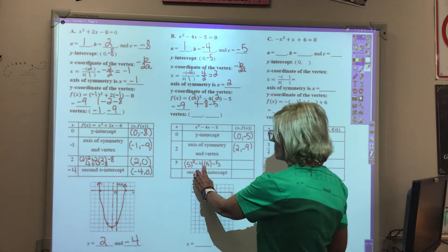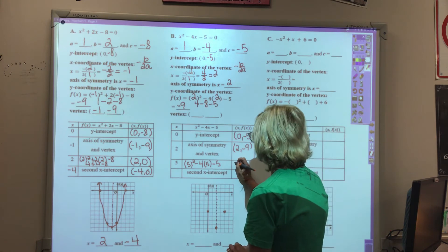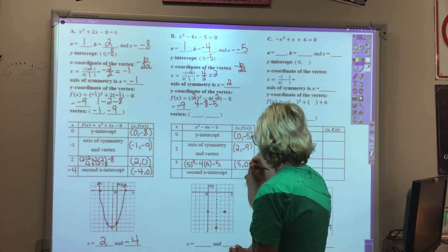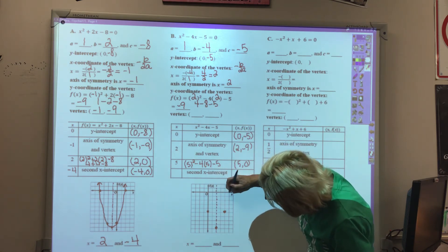If you plug in the 5 into the function, this would be 25 minus 20 would be 5 minus 5 would be 0. So the point is 5, 0.